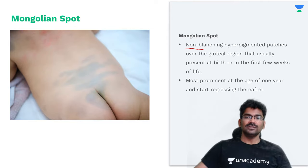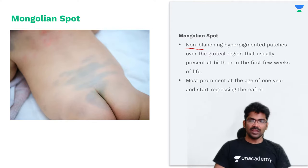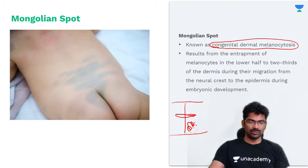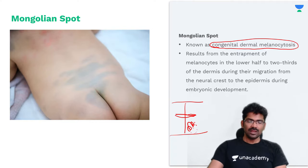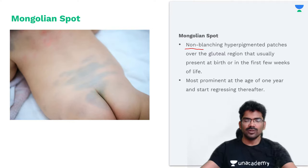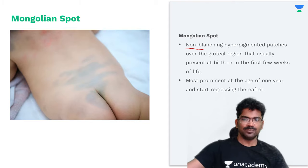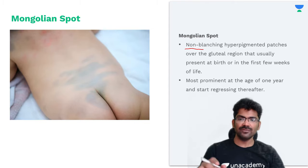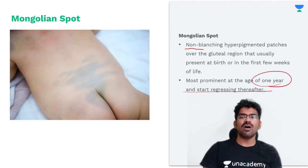The mongolian spot will be non-blanching and hyperpigmented, usually seen over the gluteal region. It presents at birth or in the first few weeks of life. It will be most prominent at one year of age and will start regressing after that.